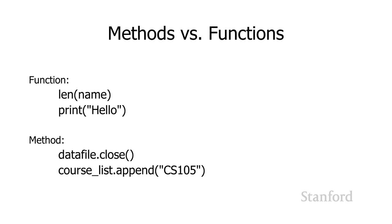You may have noticed a difference between the different ways we're accessing these built-in Python features — getting the length of something, printing something, closing a file, appending to a list. There is actually a difference. Some of them — what we refer to as functions — you just have the function name followed by parentheses, followed by whatever information you need. So len() followed by the variable storing a sequence, or print() followed by a string or number.